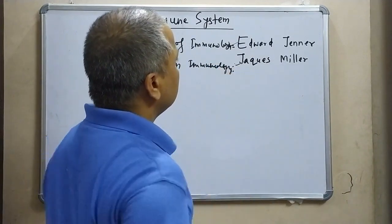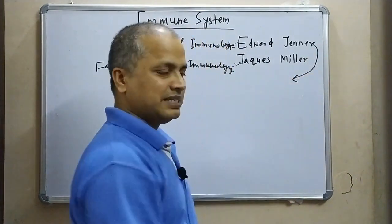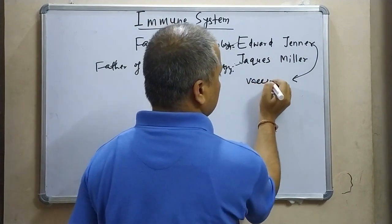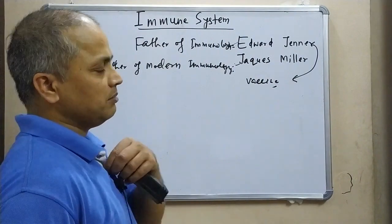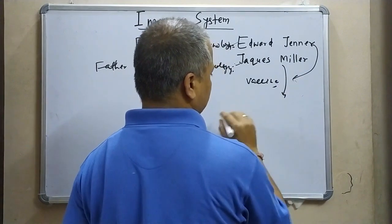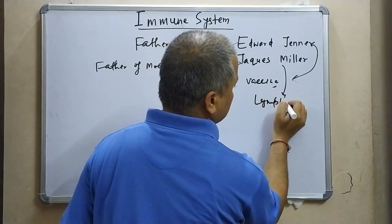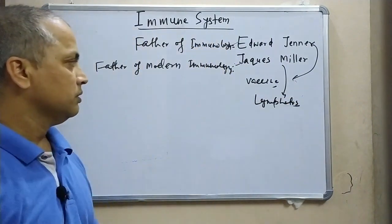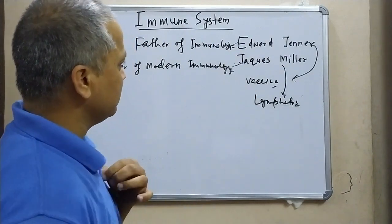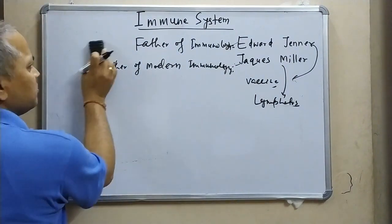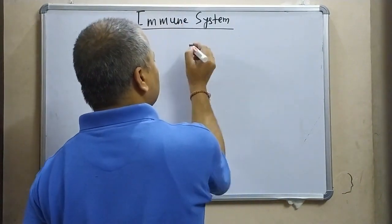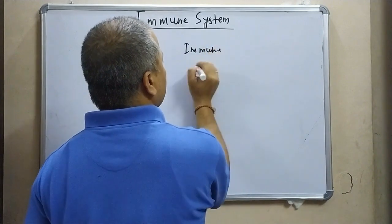Jacques Miller is called the father of modern immunology. Jenner was an English scientist who worked on vaccine development. Miller was a French scientist who worked on lymphoid and lymphatic systems. So Edward Jenner is the father of immunology and Miller is the father of modern immunology. This is our body's defense system — we can call it the immune system.